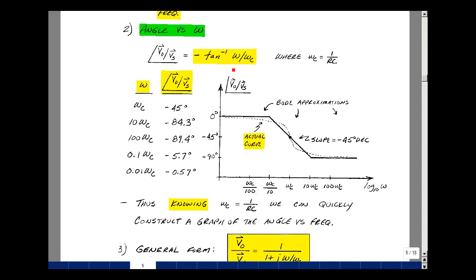If I put ω equal to 10 ω_c, I have the arctangent of 10. That turns out to be a minus 84.3. The minus the arctangent of 100 is a minus 89.4. If I were to go 1 tenth, it's a minus 5.7. And 1 one hundredth, it's 0.57.